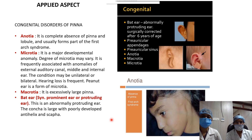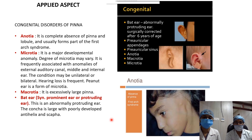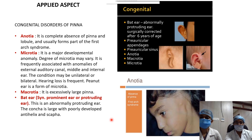Congenital disorders arise from problems during embryological development of the pinna. Anotia is the complete absence of the pinna and lobule, and usually forms part of the first arch syndrome.